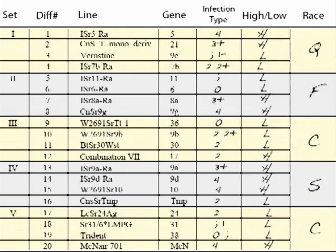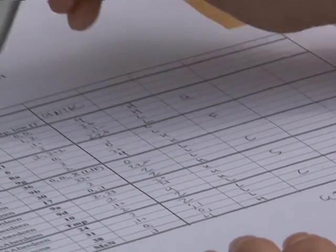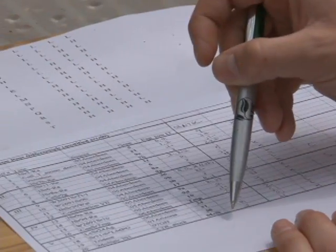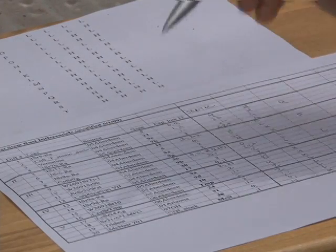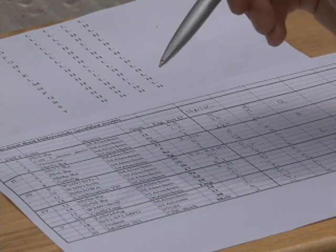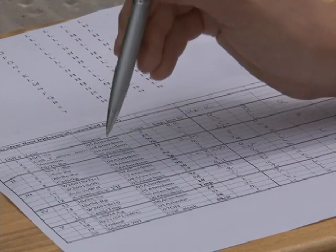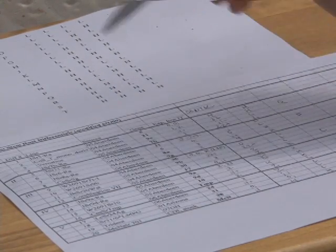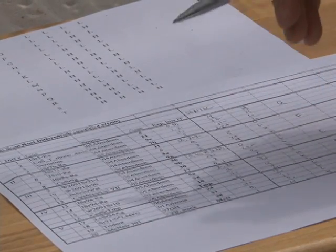That is the race name for this rust isolate, based upon the reaction to the 20 differential lines. We have this order of gene lines, which stays consistent for the North American stem rust differential set. At the Cereal Disease Laboratory, the specific lines used might be slightly different than lines other people are using. However, this order of genes is consistent and always the same for the North American stem rust differential set.